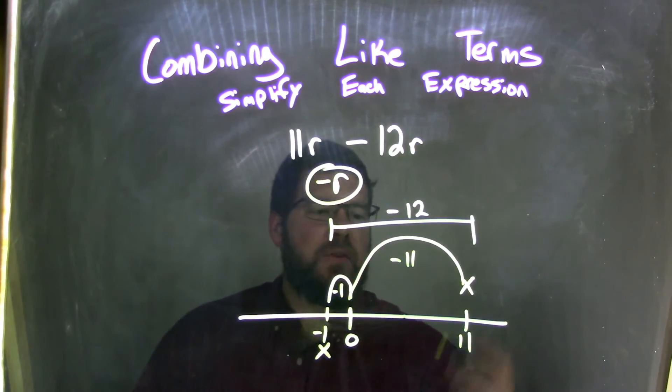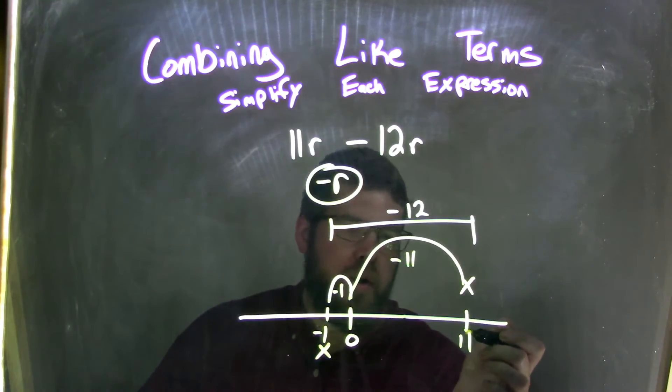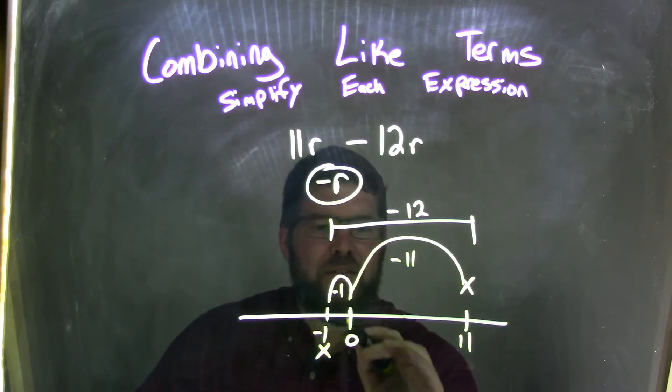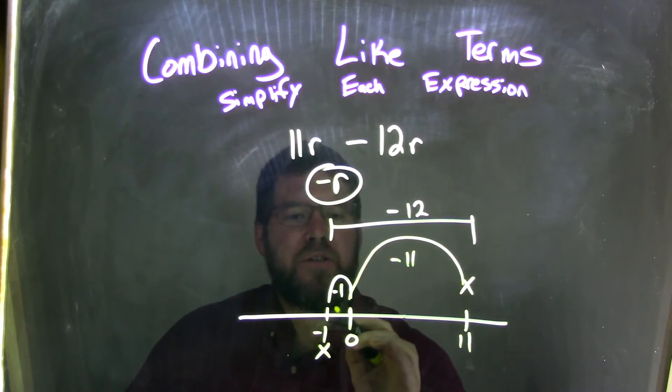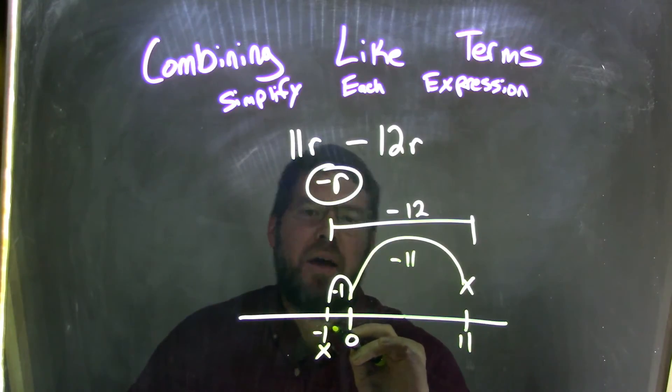But, what's really going on is we started with 11, right? 11r and I started with 11. We subtracted 12 from it. So, we jumped really quickly. Minus 11 gives us a 0. It's an easy calculation. Then, one more jump brings us to negative 1. And so,